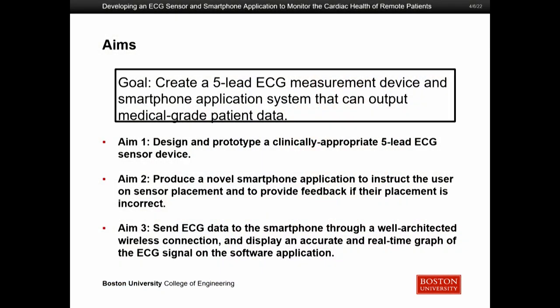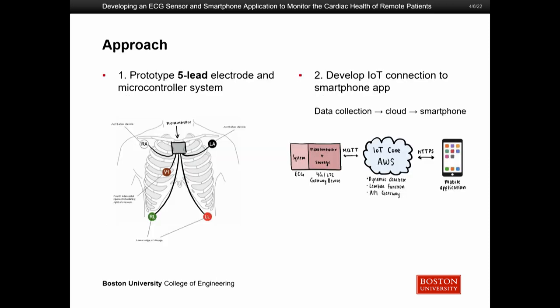Our aim is to create this five-lead ECG and make it as clinically accurate as possible. We then ran experiments to test how good our data was. To talk about our approach, we started with the physical device itself. We prototyped the five-lead electrode — it looks like the picture here. There's a box where we host our hardware, and leads come out where you place the electrodes on your body.